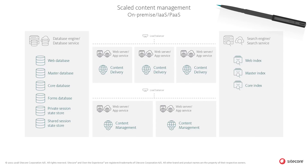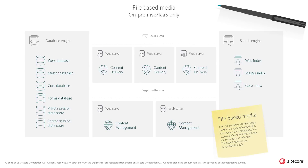In situations where content management is more business critical or where there are many simultaneous editors, it's possible to scale out the content management roles across multiple servers or services. It is important to carefully study the documentation before scaling out the content management roles, as there are features which need special configuration in a load-balanced content management setup. Sitecore will, by default, store media such as images or files in the master and web databases, which is the recommended approach as it assures complete compliance with publishing and security aspects. In an on-premise setup, Sitecore also supports storing media on the file system for special business scenarios; however, this poses challenges in scaled scenarios, as special configurations such as replication might be needed.